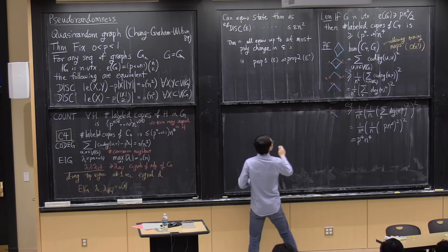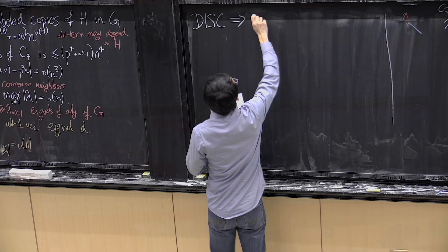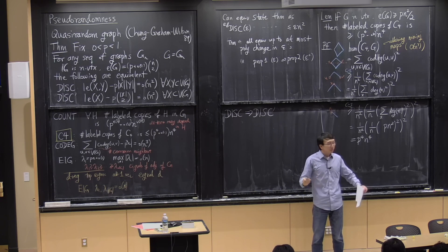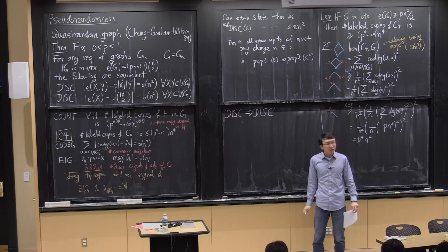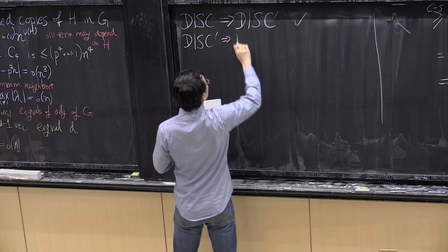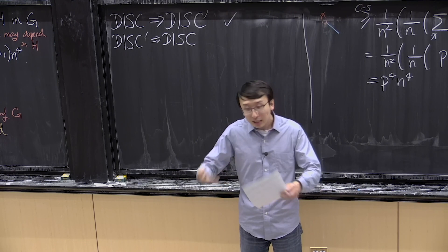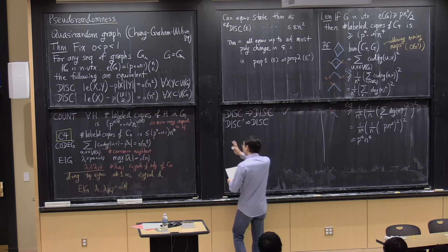Let's start proving the Chung-Graham-Wilson theorem. The first step is the two versions of DISC. DISC implies DISC prime is pretty easy — you just take Y equal to X, being slightly careful about the definitions. For the other direction, where you only have discrepancy for single sets and want to produce discrepancy for pairs of sets, this is a fairly common technique in algebra allowing you to go from bilinear forms to quadratic forms and vice versa.